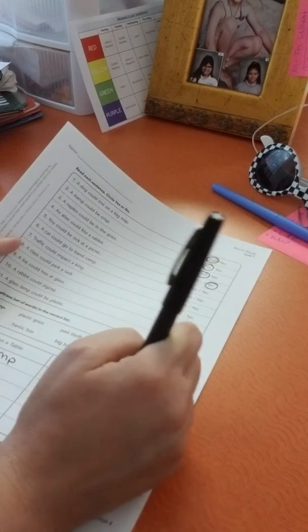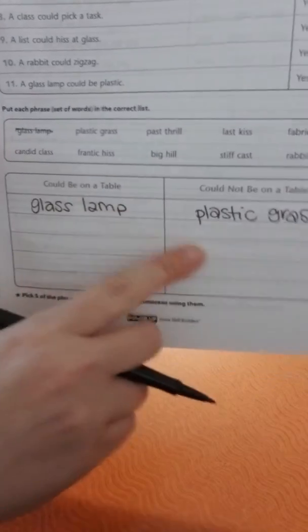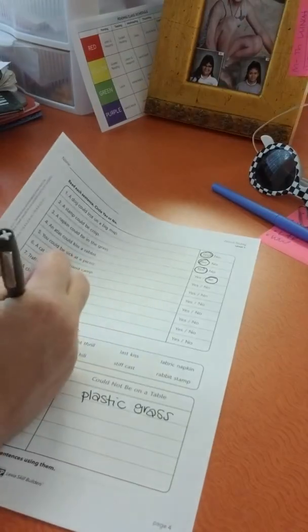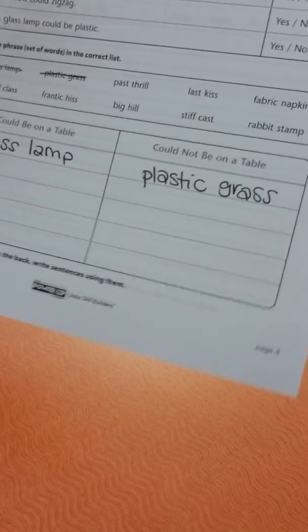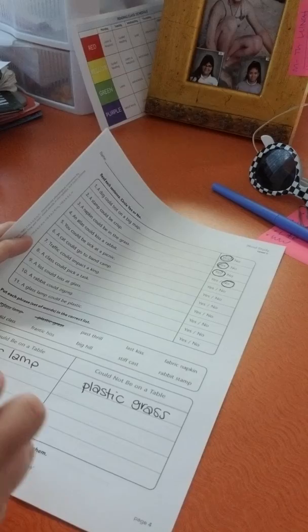So you're just going to go through and decide if these things could be on a tabletop or could not be on a table, and then you're going to write them in the blanks. Don't worry about this at the bottom, you don't need to do that.